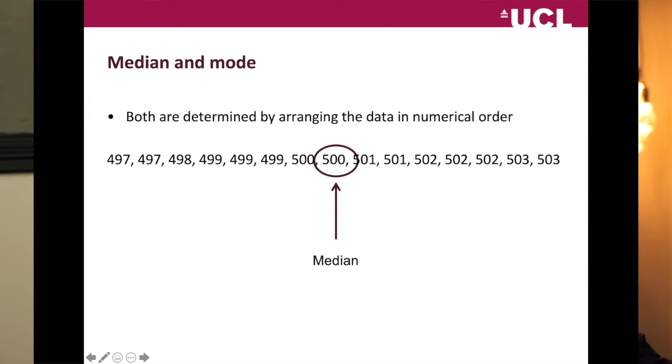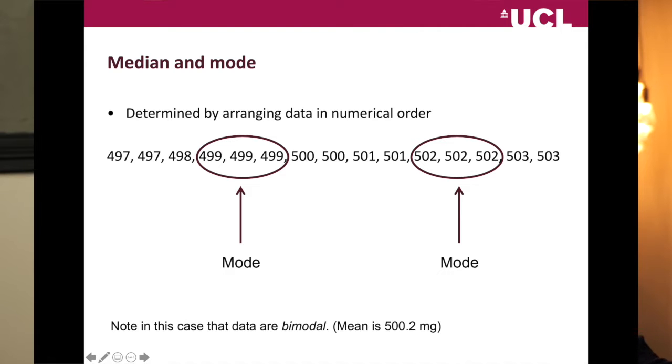There are 15 data points in the table — tablet weights from a sample. If we line them up, the median is the centre point (or average of the two centre points for an even number). The mode is the most commonly occurring value — in this instance there are two: 499 and 502, so the data are bimodal. Interestingly, if you calculate the mean of those data, it is 500.2 — relatively similar to the median of 500.